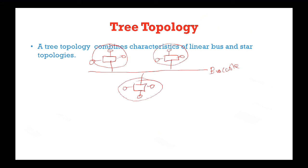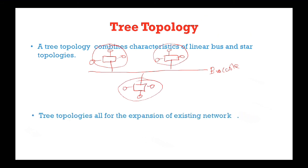So we can say that a tree topology consists of a group of star-configured workstations connected to a linear bus backbone. Tree topologies allow for the expansion of an existing network and enable schools, colleges, or organizations to configure a network to meet their needs.